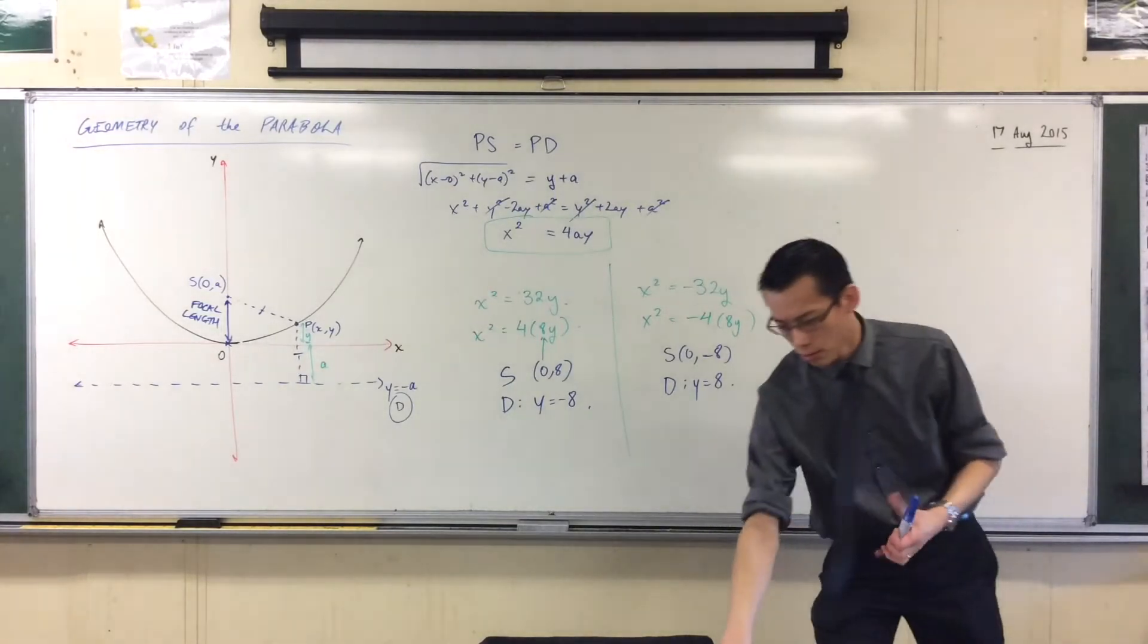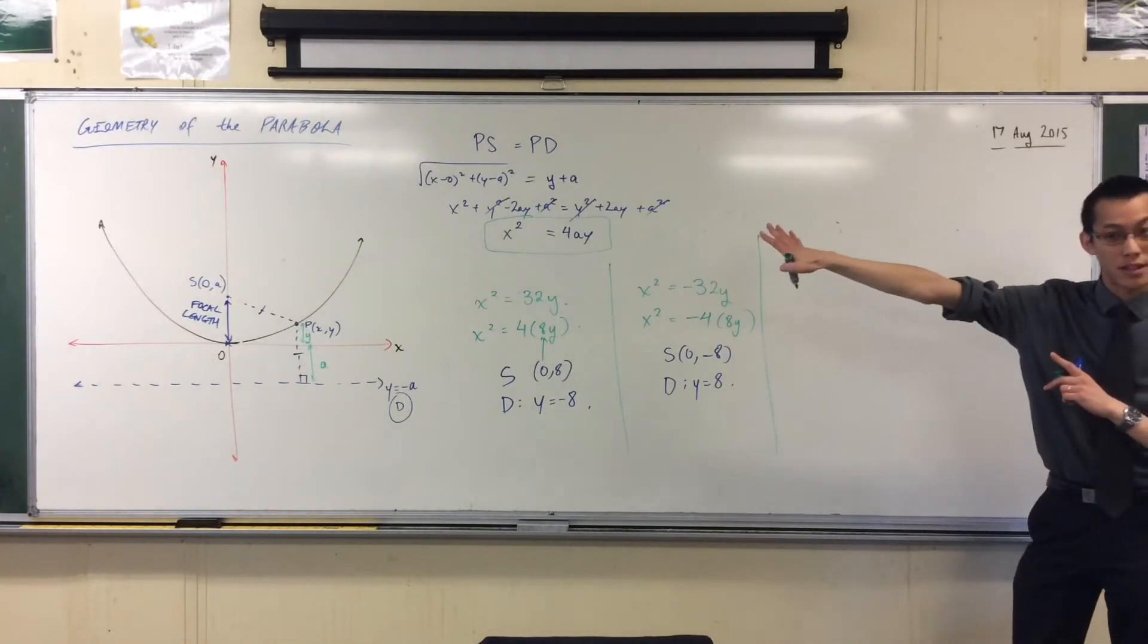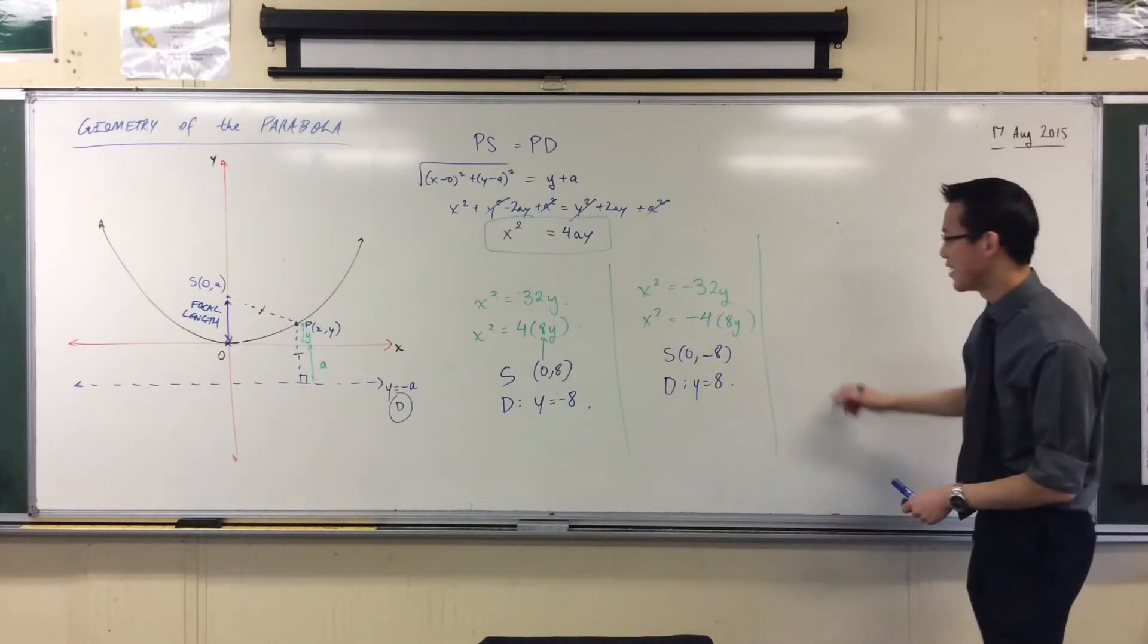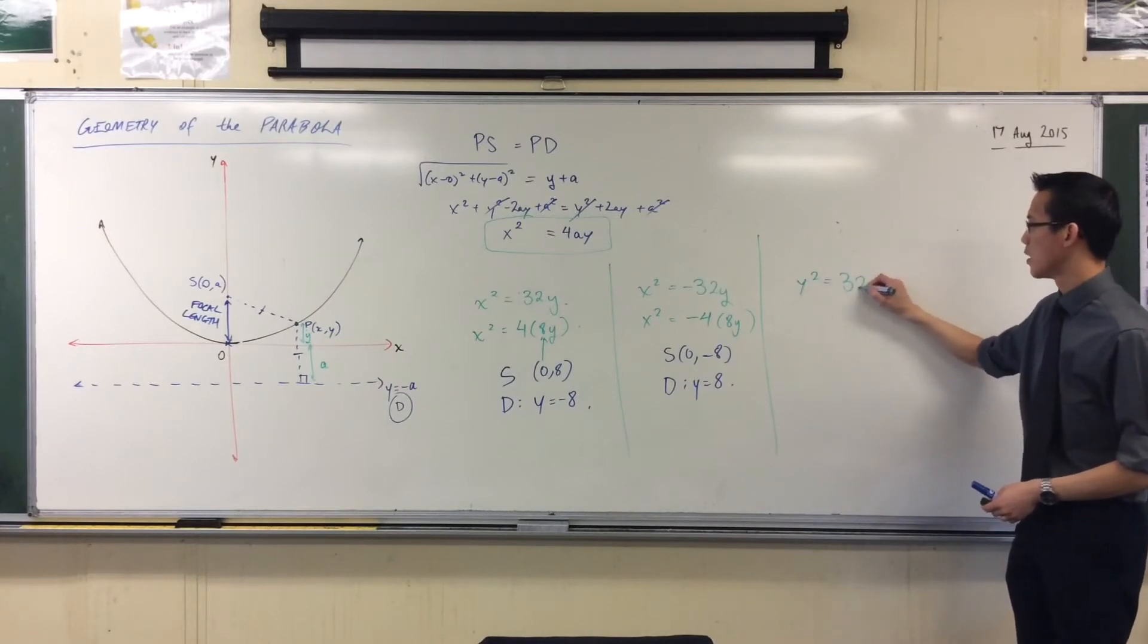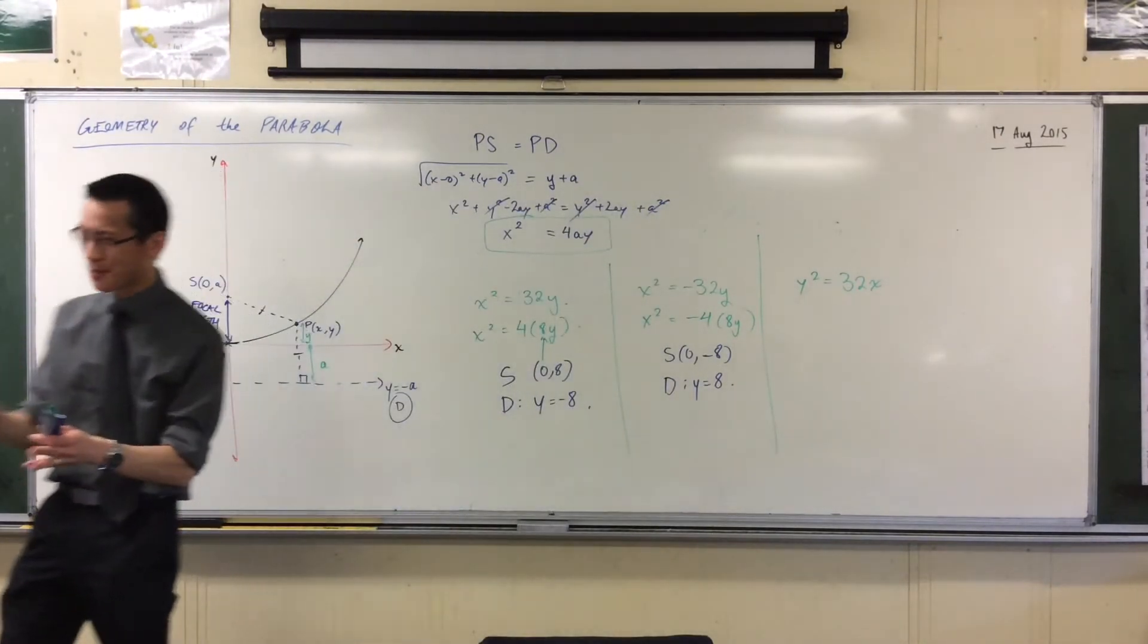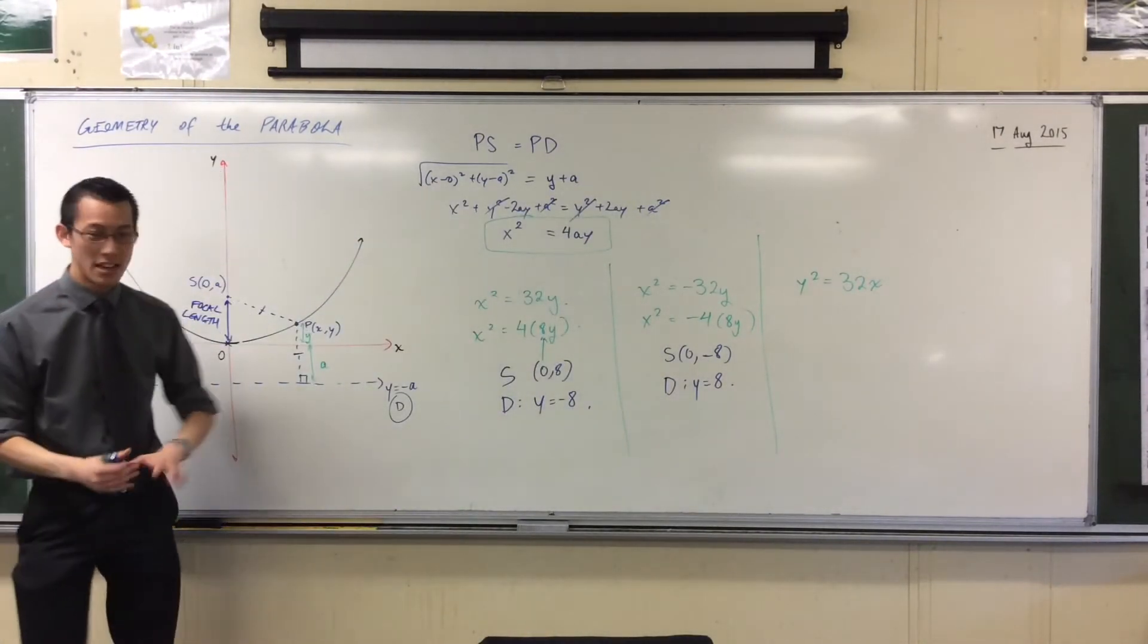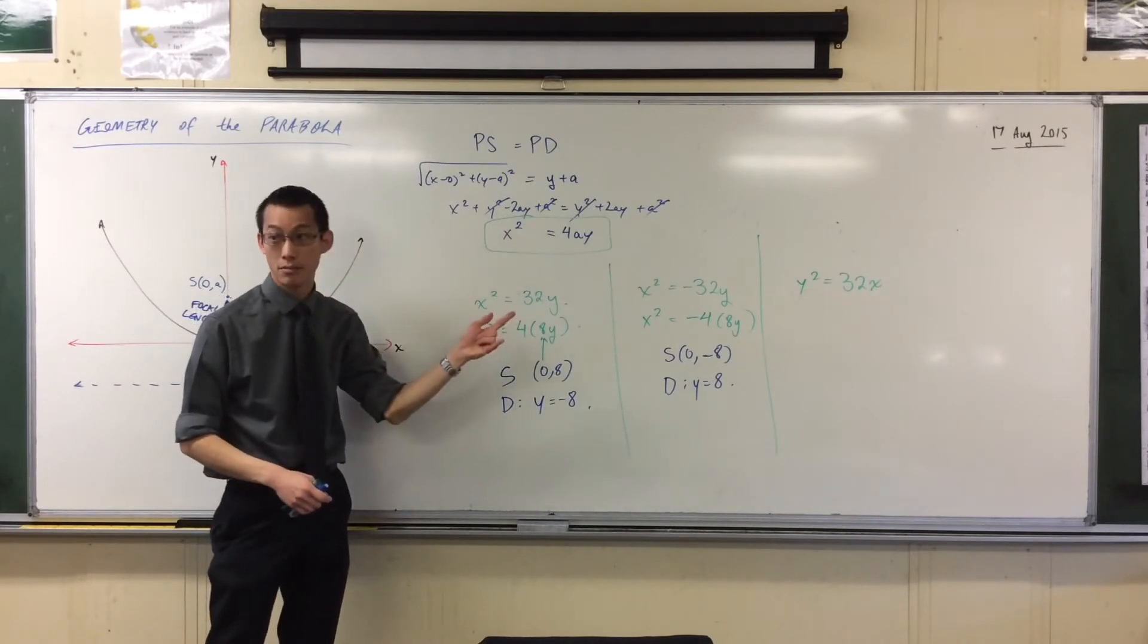Let me do one more. And then I'll label some more stuff on this parabola. I hope it's big enough for you. If I flip things around, let's go y squared equals 32x. Now we've seen these before, actually. We've drawn these, right? Just remember, first, it's in this kind of form. It's just that the x's and y's are backwards, right? So let's just quickly factorize it.